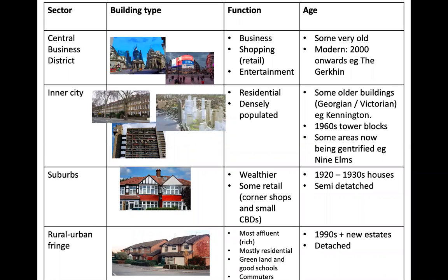Here's a table showing each different zone, its function, and the age of the buildings. In the centre we have the CBD — the building type can be a mixture of old and new, as seen in the City of London and the West End where there's a contrast of building types. They're used for business, shopping and entertainment. Some buildings are very old but have generally started to be modernised from the 2000s onwards — an example in the City of London is the Gherkin.